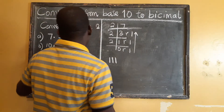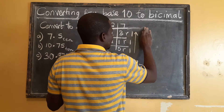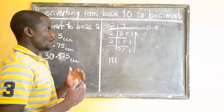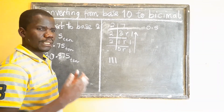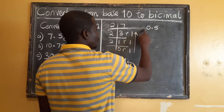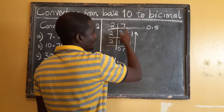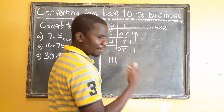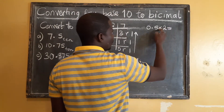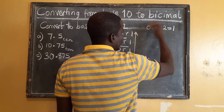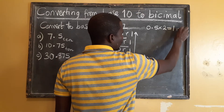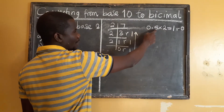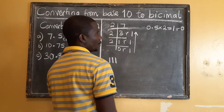Now remember we have the other part — the decimal number. I'm going to take it as 0.5. For the decimal part we actually do the opposite: instead of dividing by 2, we multiply by 2. When you multiply 0.5 by 2, you get 1 remainder 0. So you get 1 remainder 0.